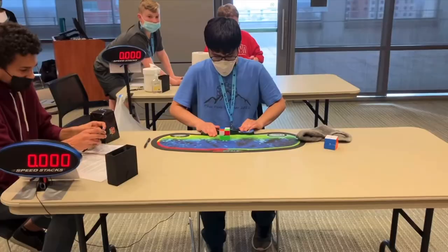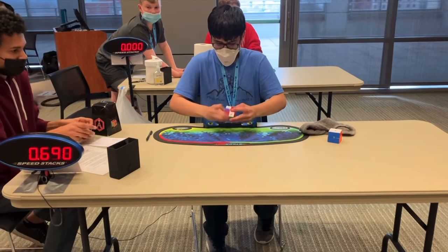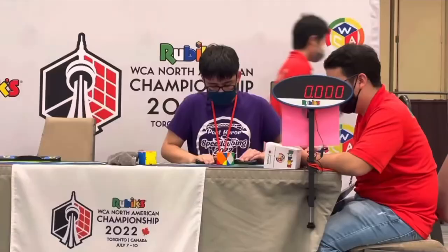Zayn Kanani is a speedcuber from the US, specializing in 2x2 and skewb. He holds the 2x2 world record average and he also holds the skewb world record average and single.